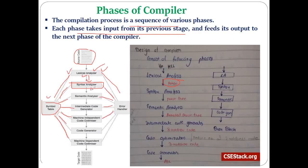The syntax analyzer generates a parse tree as output, which is given as input to the next phase — the semantic analyzer. The semantic analyzer determines the meaning of statements and expressions by generating an annotated parse tree. We discussed syntax-directed translation, which helps determine the meaning of statements. The semantic analyzer generates a modified or annotated parse tree, which is given to the intermediate code generator.